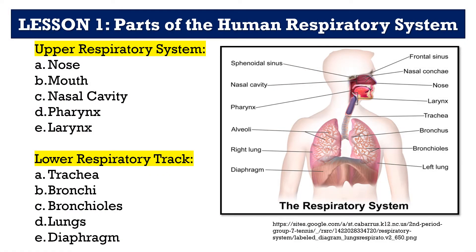We are now here in the parts of the human respiratory system. I want you to look at the illustration on the right side as I go along the different parts of the respiratory system. Let's start first with the upper respiratory system. We have here the nose — I'll bet you are familiar with that one. Second is the mouth, also known as our oral cavity. You might be asking, is the mouth part of the human respiratory system? The answer is yes. It is an external opening for the respiratory tract.